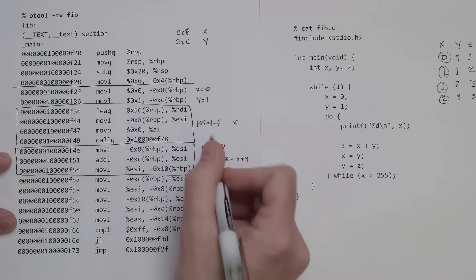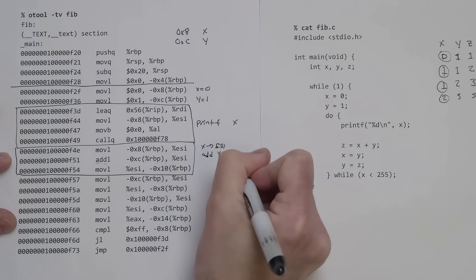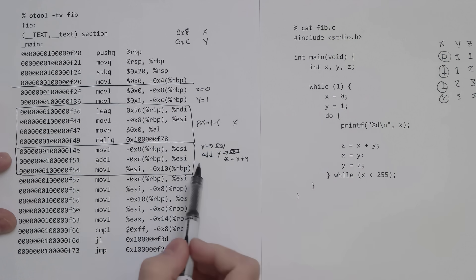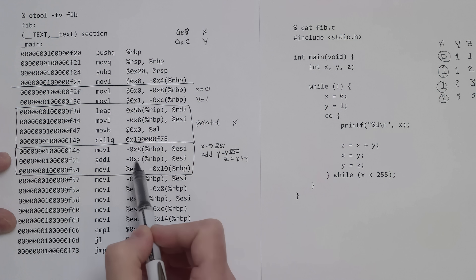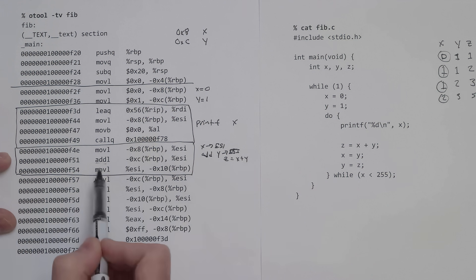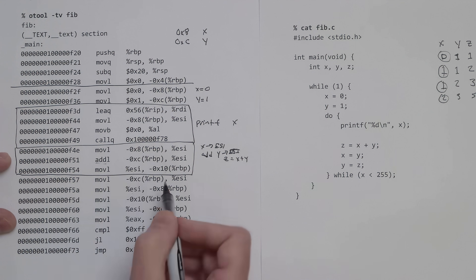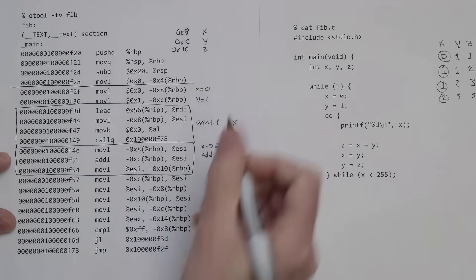Then we add the value of 0xc, which is y, to the ESI register. Then we take the value of ESI register and put it into 0x10, which is a new memory location. 0x10 is the memory location of z.